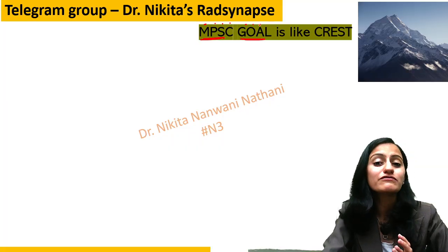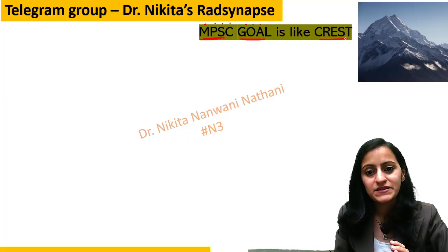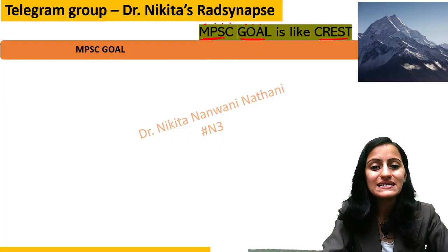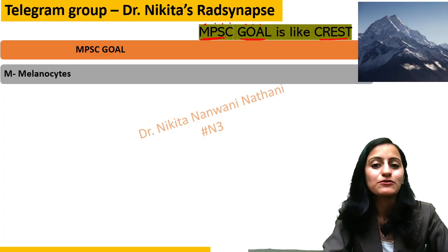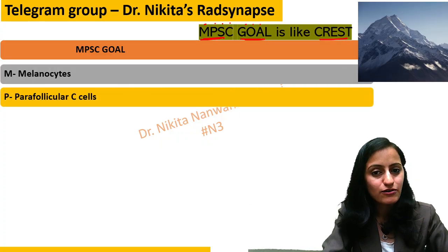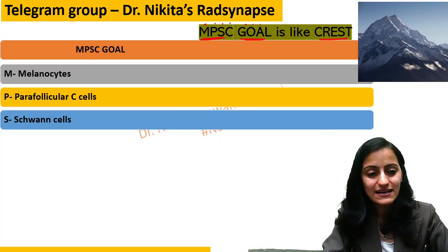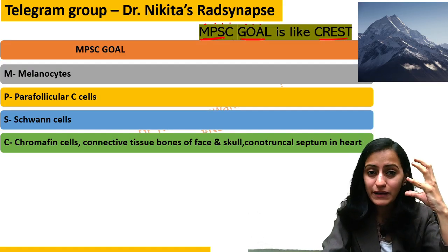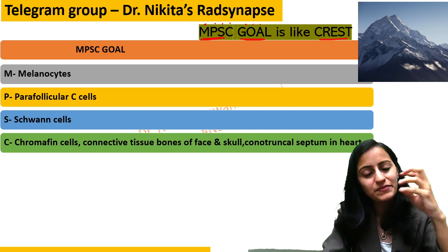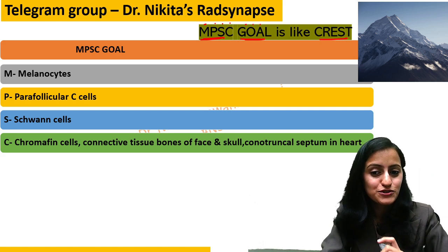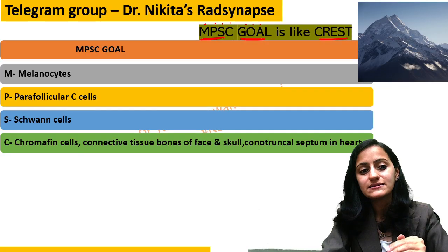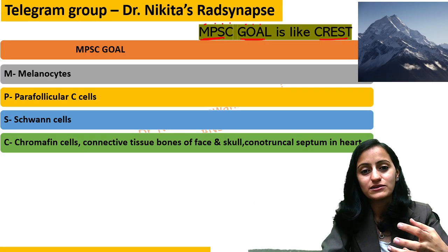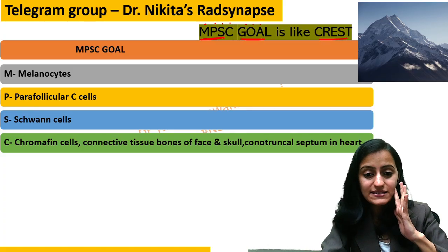Each alphabet stands for the derivatives of the neural crest cells. M stands for melanocytes, P stands for parafollicular C cells, S is for Schwann cells and satellite cells, C stands for three things: chromaffin cells, connective tissue and bones of the face and skull, and the conotruncal septum in the heart.